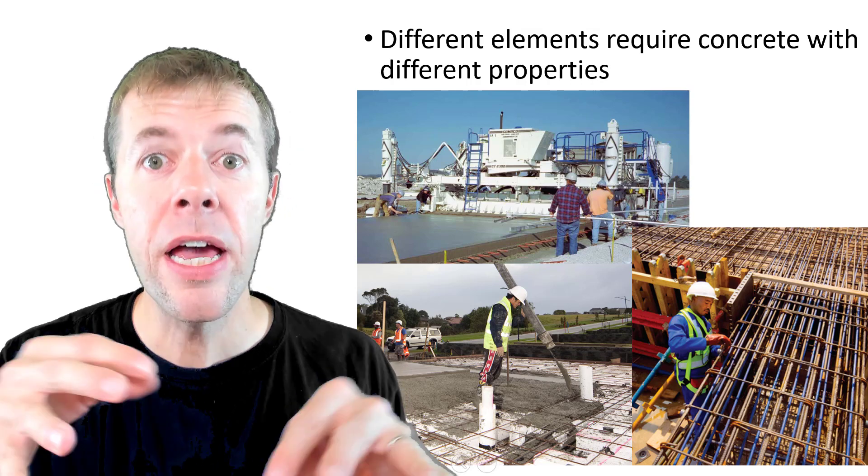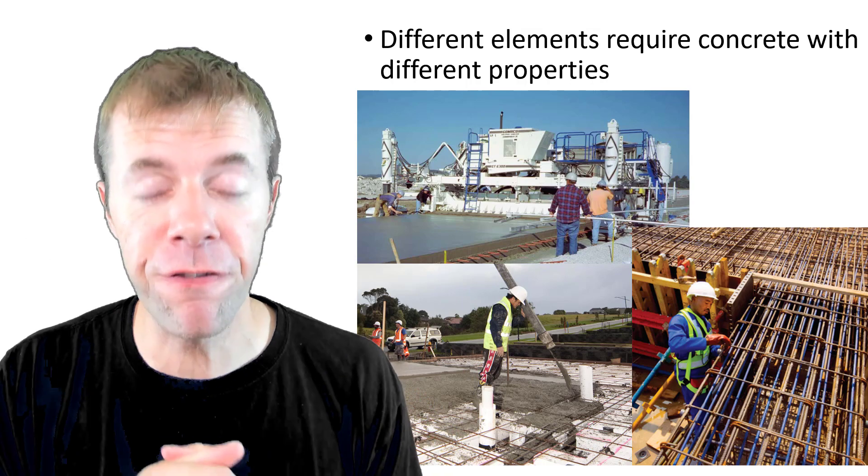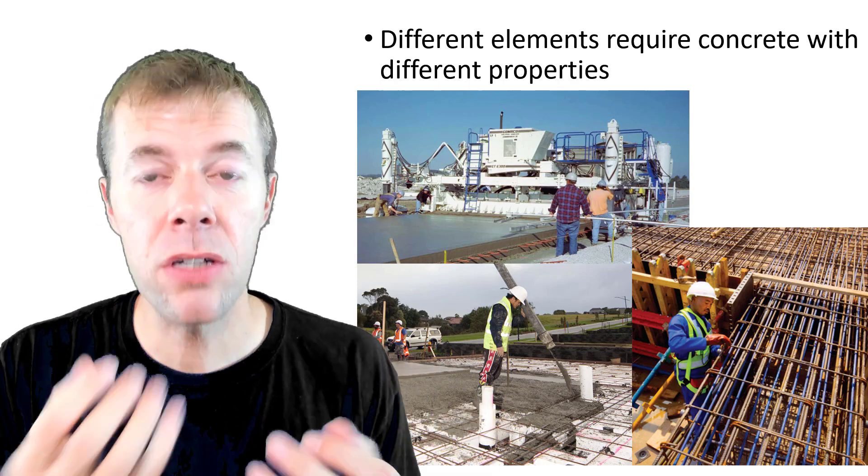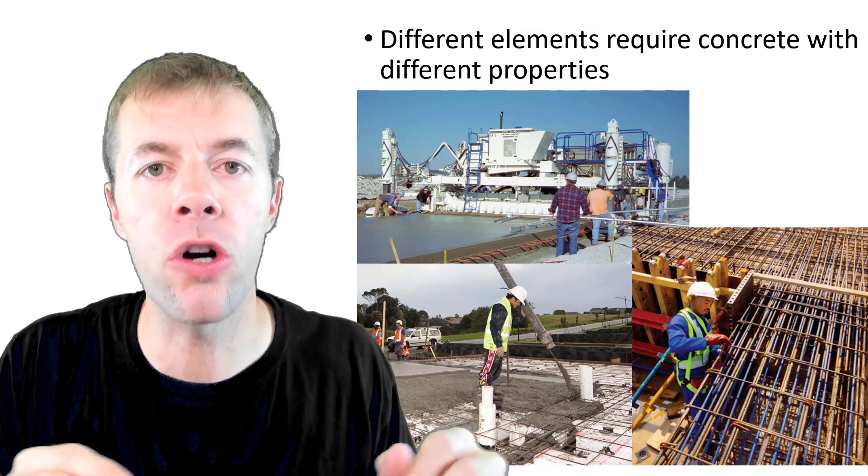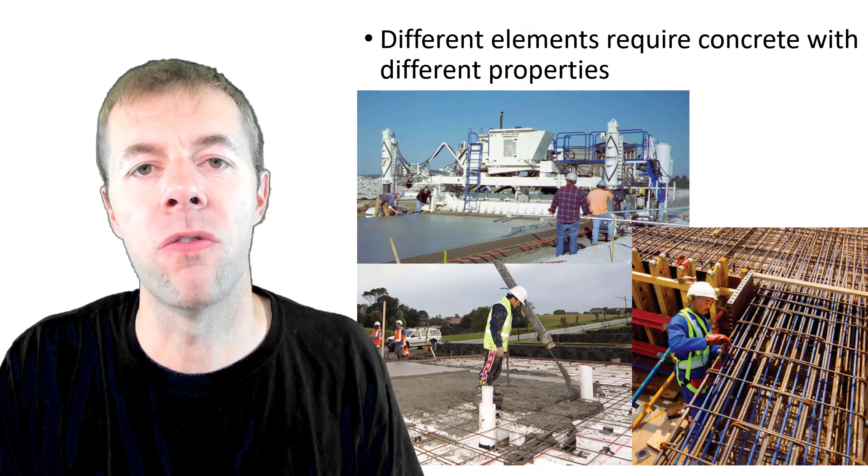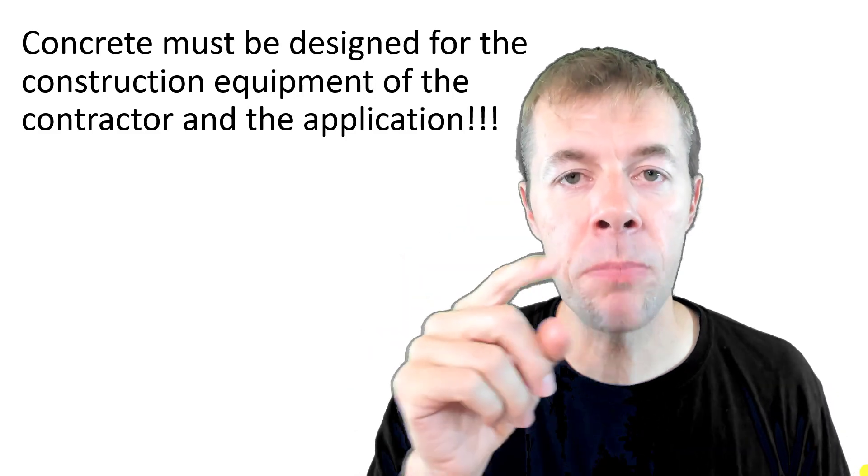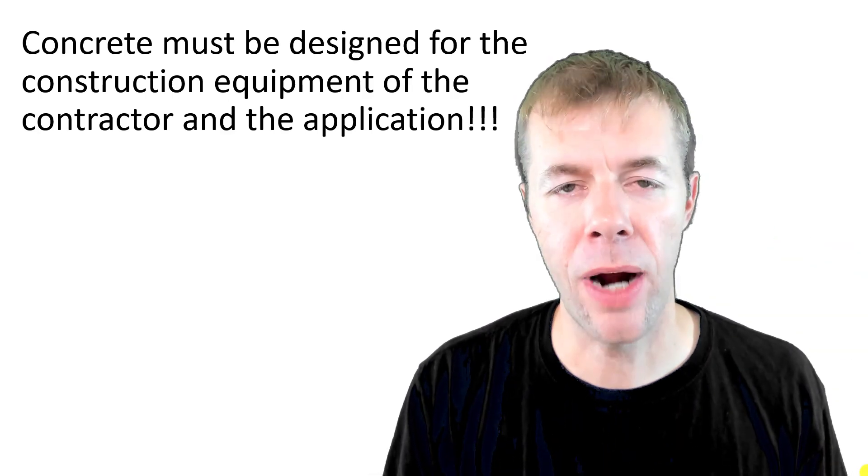And then over here on the right, we have this concrete with extremely dense reinforcement. Look how close it is. Like they like to say that if a bird happened to fly in there, it would die. Oh, my poor bird. It wouldn't make it out because the cage, this reinforcing are so tight together. And to fill that up, you need an extremely flowable concrete with very small aggregate that you don't want to consolidate, that you want to consolidate itself. These are three totally different concretes that require three totally different designs. So concrete must be designed for the application, but also for the equipment and the expertise of the contractor. That's really important.